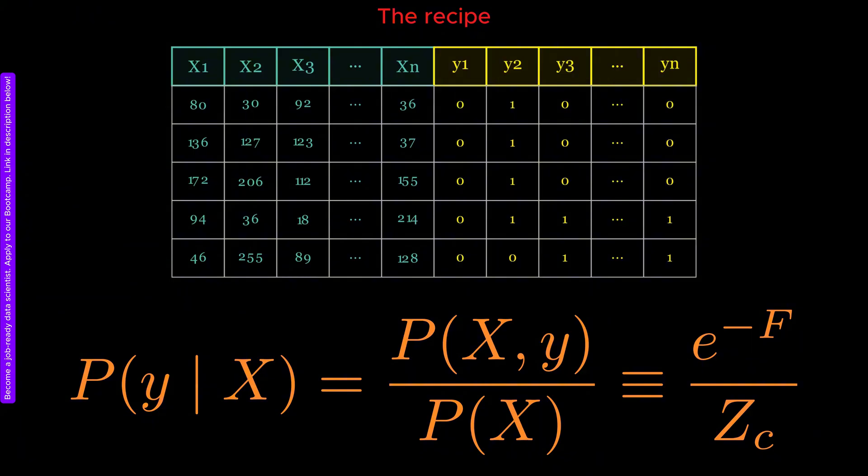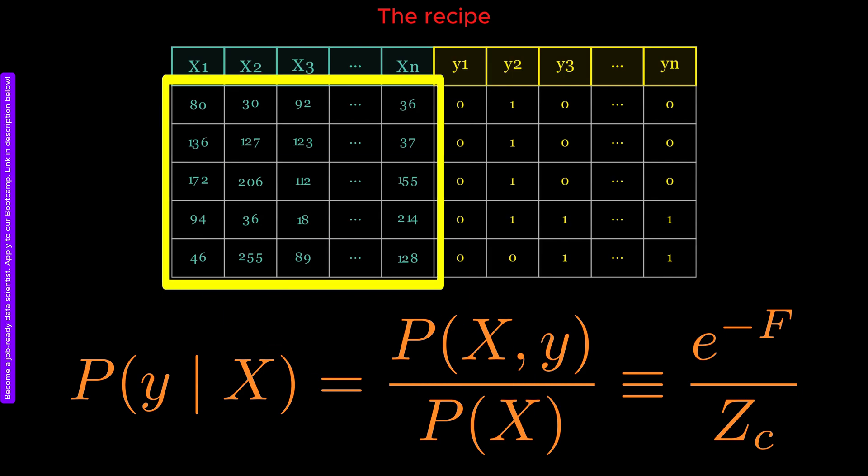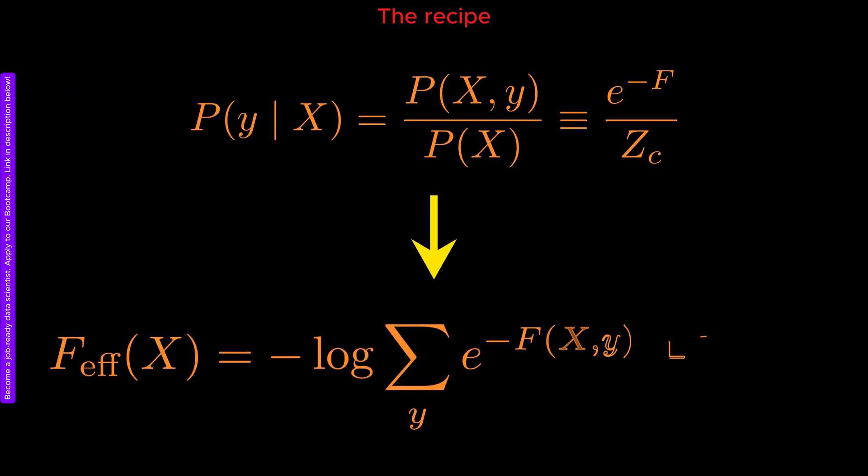We already use the kernel density estimator to compute the joint probability in numerator. To compute the marginal probability in denominator, we again apply the kernel density estimator, but this time only to the columns representing the input images. We exclude the 10 output columns and estimate the marginal probability of the inputs alone. The effective free energy is then obtained as a simple logarithm of the conditional probability.